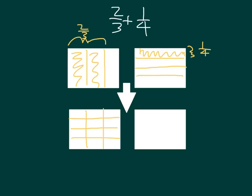How many parts is that all together now? If we look at this model here, we count 12 parts. If we were to still look at 2 thirds here, we count 8 of those parts. And we had divided it into twelfths, so this here is 8 twelfths. 2 thirds does equal 8 twelfths.